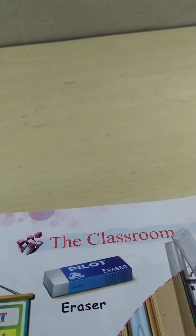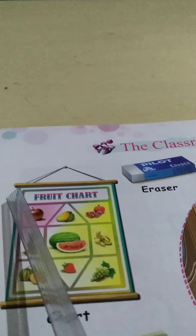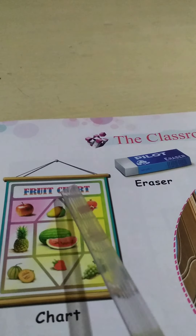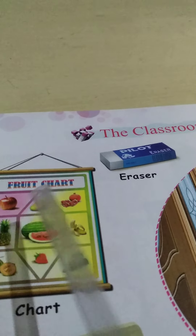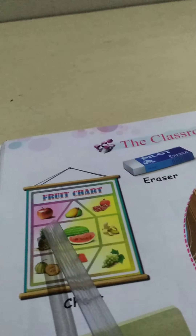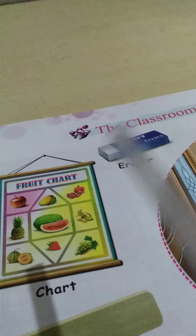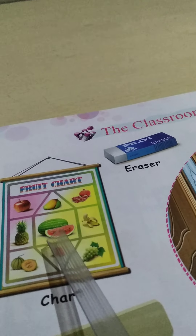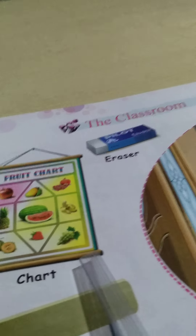The Classroom. What is this? This is a chart — a fruit chart. So many fruits are here. You can see — some fruits are here: apple, mango, bananas. Everything is here. This is chart. C-H-A-R-T, chart.